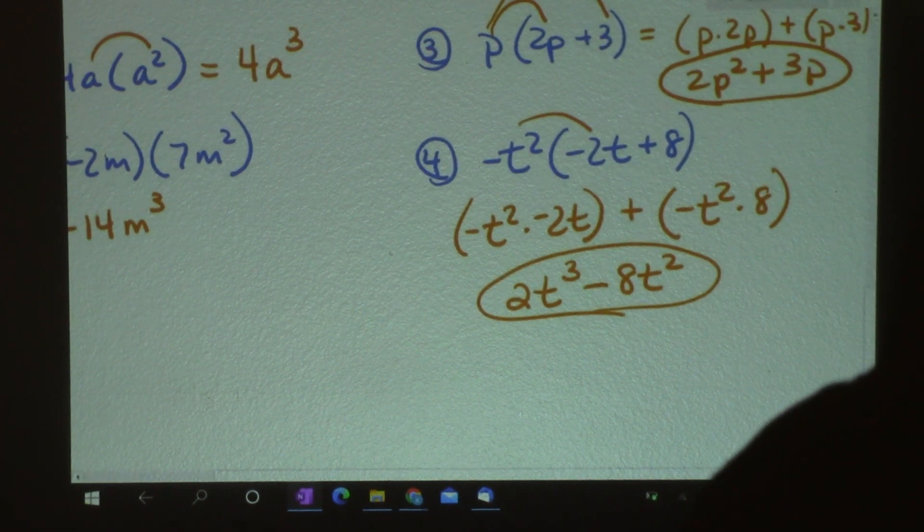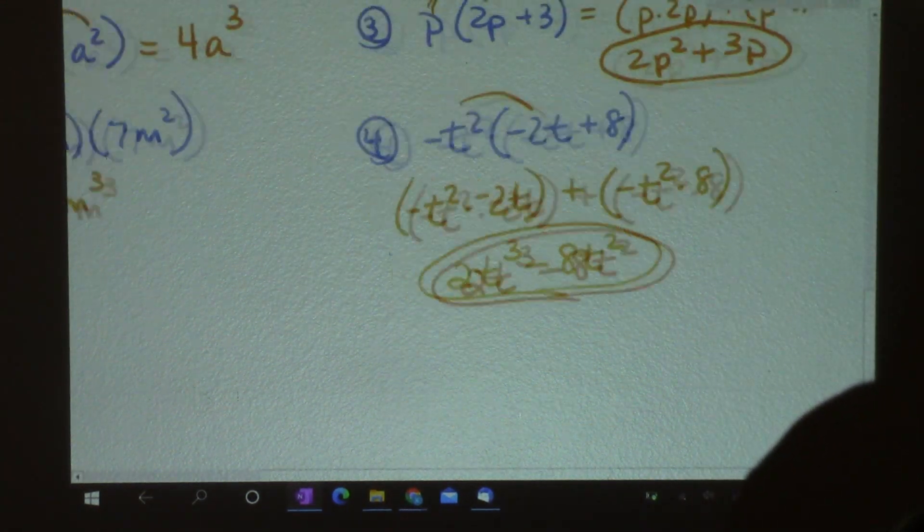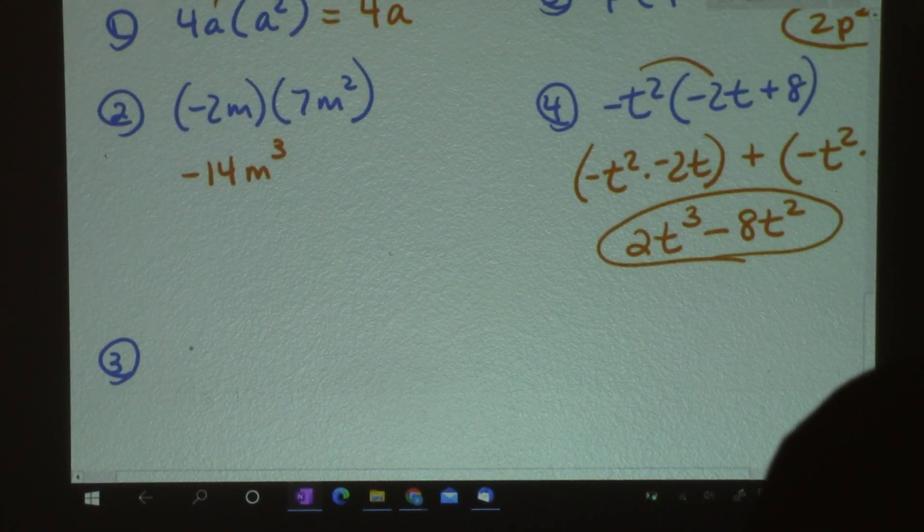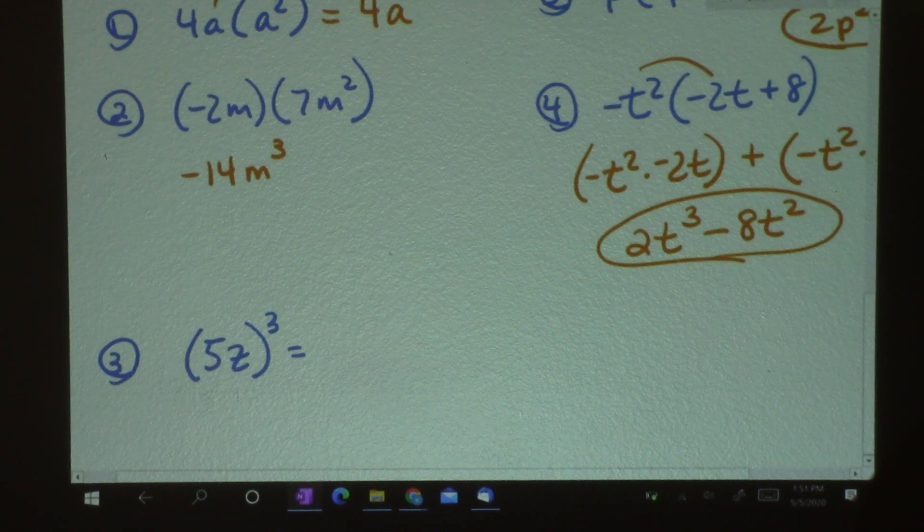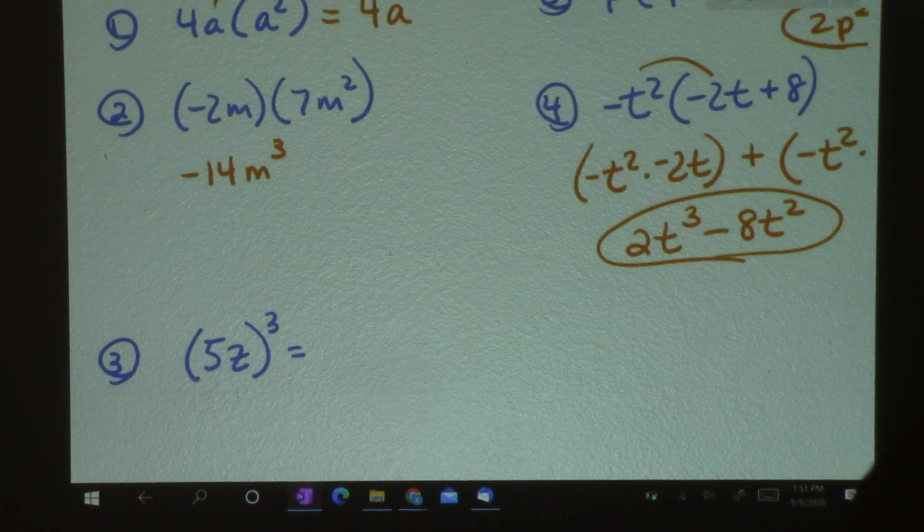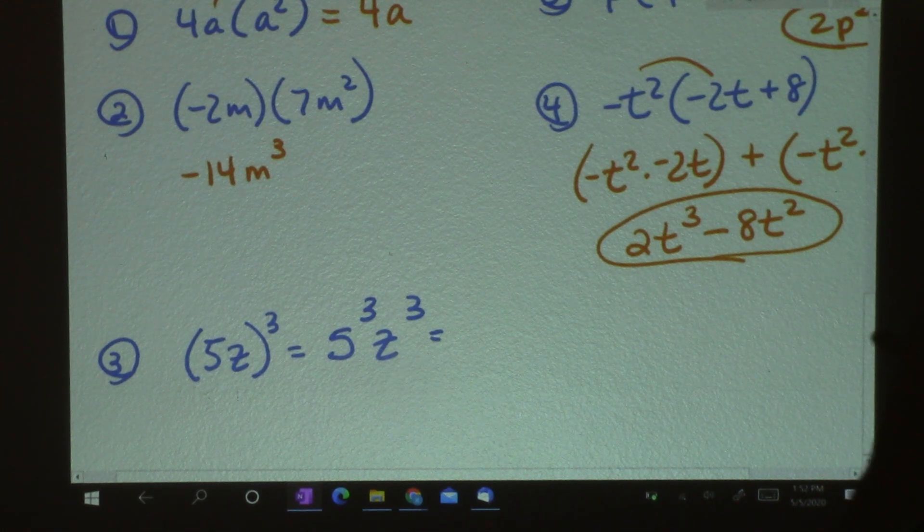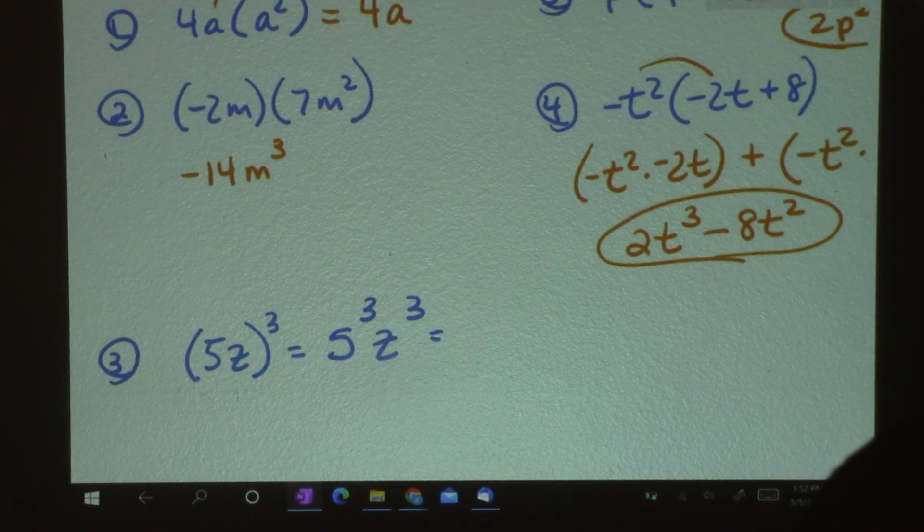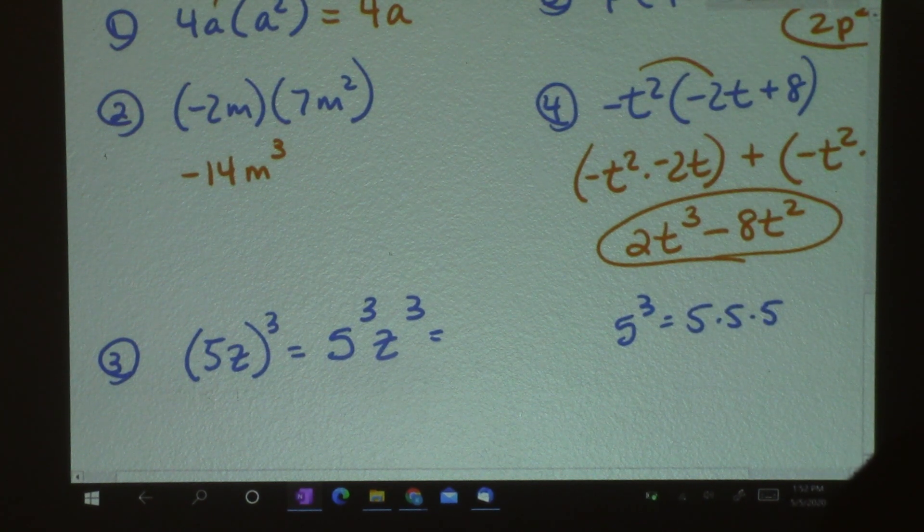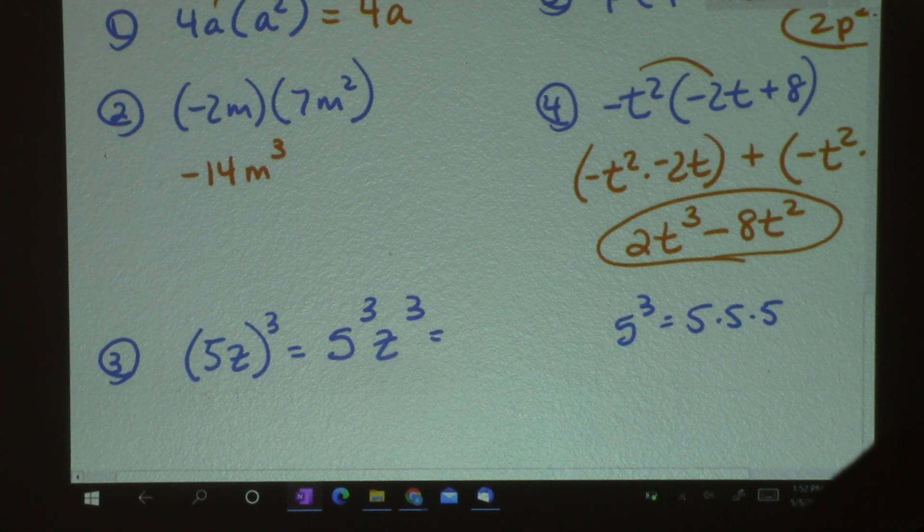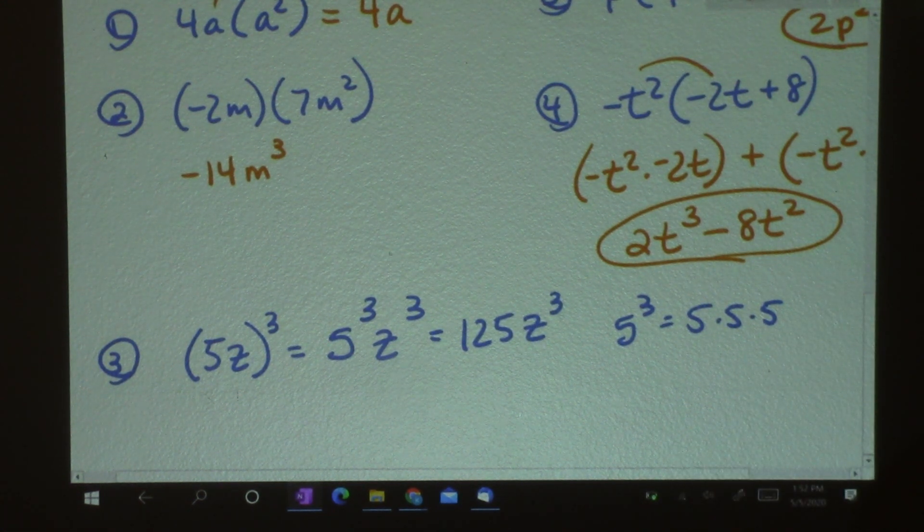In the meantime, I will change colors. Let's use orange. So let's go back to this. So I only have one number, so it's just going to be 4. And then I add my exponents, so I get 4a to the third power. And then number 2, I've got negative 2 times 7, and then m times m squared is m cubed. Now over here, I'm going to multiply p times both of these terms. So I have p times 2p plus p times 3. And let's see what we get. Here, in this one, I get 2p squared plus 3p. And that's my answer.